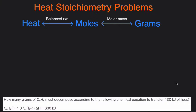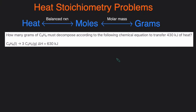In the last question we're asked to solve for grams of C6H6 — benzene — that must be decomposed to transfer 430 kilojoules of heat. We have a reaction with the delta H given. This time we're starting at the heat and moving all the way to grams, so this is going to be a two-step conversion. Previously we only saw a one-step conversion between heat and moles; now we're going all the way to grams. We start with the given: 430 kilojoules of heat.